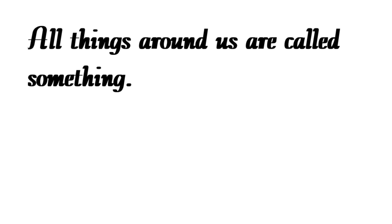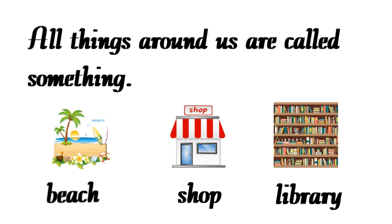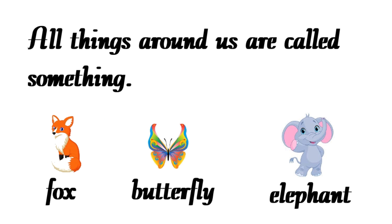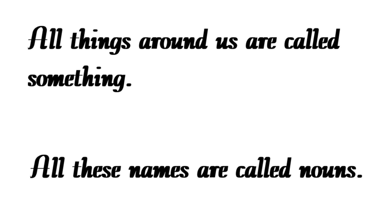Good morning students! Today we will be learning about nouns. All things around us are called something — they all have names. All people have names like man, mother, soldier. All places have names like beach, shop, library. All animals have names like fox, butterfly, elephant. All things have names like computer, flower, box. So all these names are called nouns.